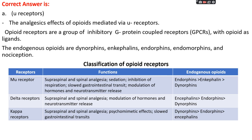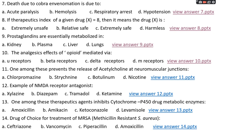Mu receptors function mainly in supraspinal and spinal analgesia, sedation, inhibition of respiration, slowing gastrointestinal transit, and modulation of hormones and neurotransmitters. Delta receptors include supraspinal and spinal analgesia and modulation of hormones and neurotransmitters. Kappa receptors include supraspinal and spinal analgesia, psychomimetic effects, and slowing gastrointestinal transit. Regarding endogenous opioid affinities: at mu receptors, endorphin is most potent; at delta receptors, enkephalin is most potent; at kappa receptors, dynorphin is most potent.